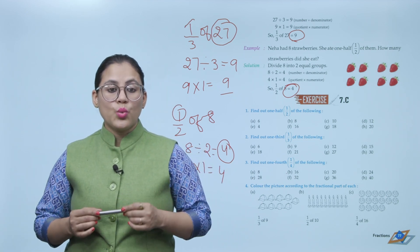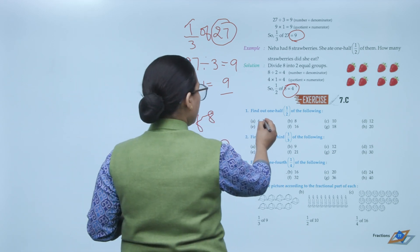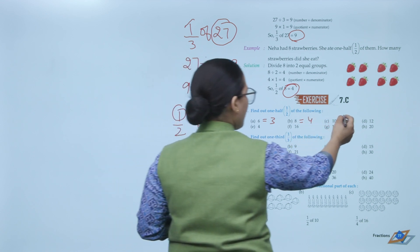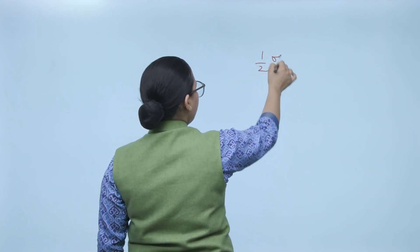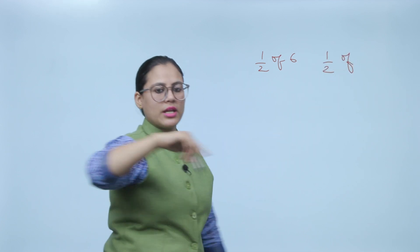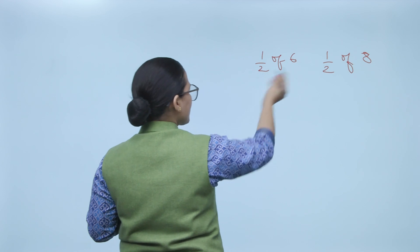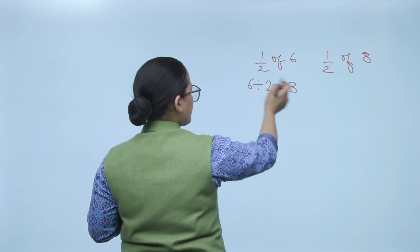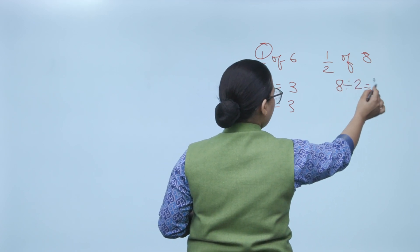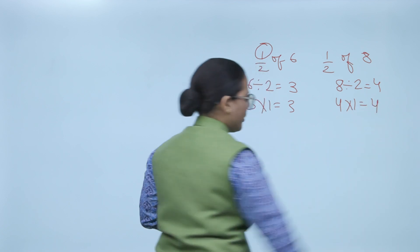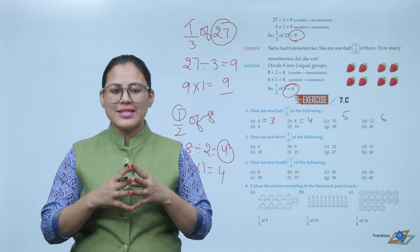Exercise 7C: Find one half of the following numbers. Half of 6 is 3, half of 8 is 4, half of 10 is 5, and half of 12 is 6. To find these: divide 6 by 2 to get 3, then multiply by 1 to get 3. Similarly, divide 8 by 2 to get 4, then multiply by 1 to get 4. I hope you understood fractions. Now practice this exercise on your own.